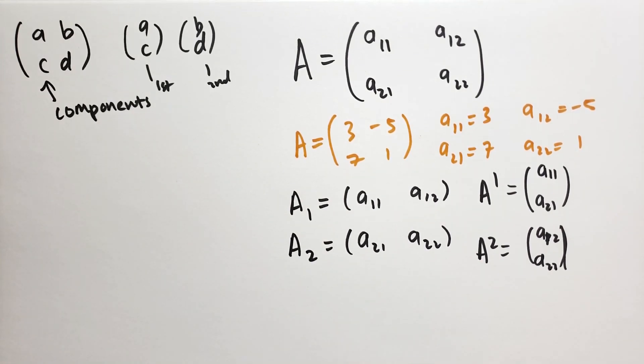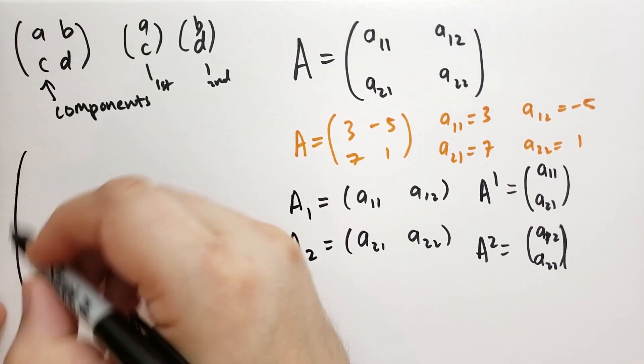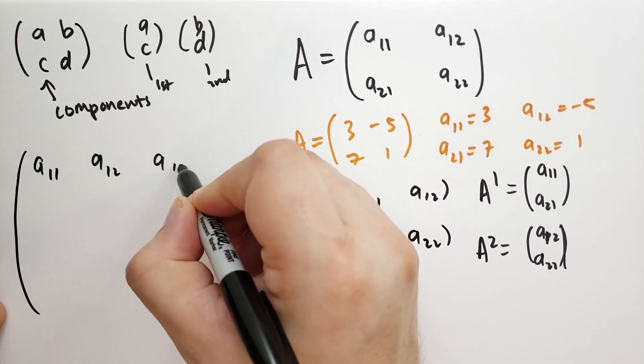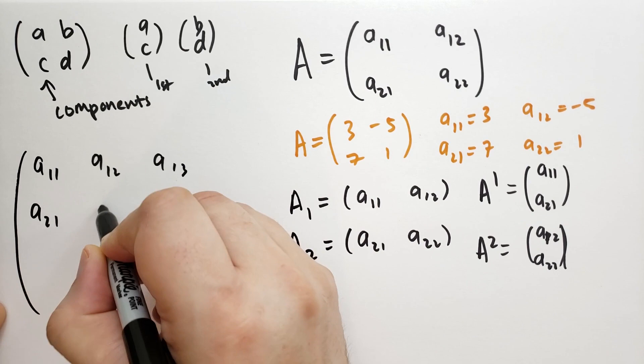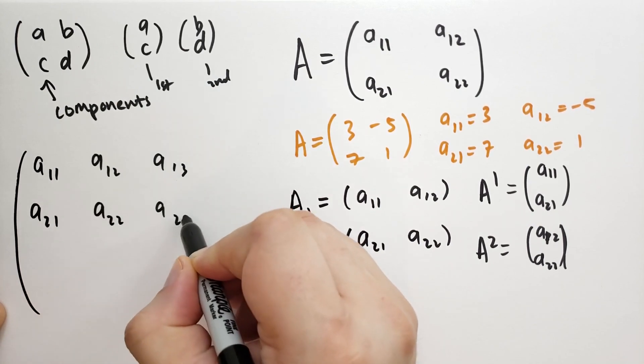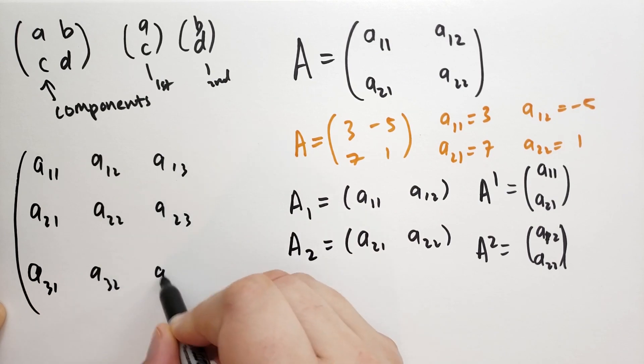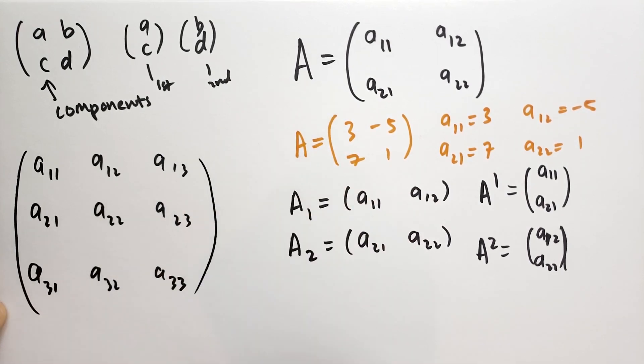Suppose we had a 3x3 matrix. A 3x3 matrix, we would have a11, a12, a13, and then a21, a22, a23, and then a31, a32, and a33.